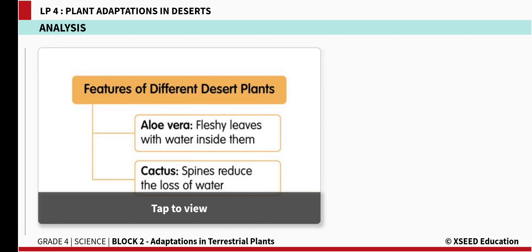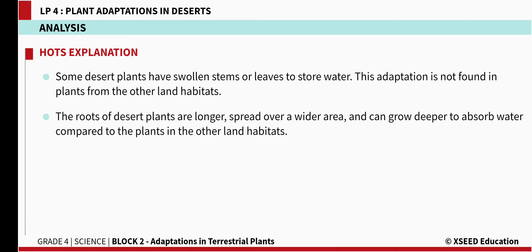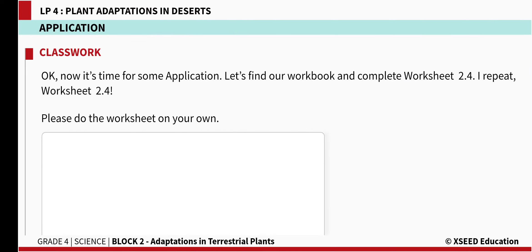The hot discussion question is: how are adaptations in desert plants different from those in plants found in plains or mountains? Some desert plants have swollen stems or leaves to store water — this adaptation is not found in plants from other land habitats. The roots of desert plants are longer, spread over a wide area, and can grow deeper to absorb water, compared to plants in other land habitats. Thank you.